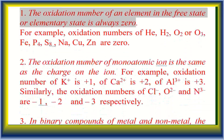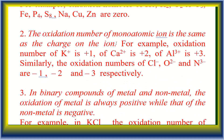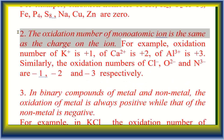Rule 2: The oxidation number of a monatomic ion (one atom present) is the same as the charge on the ion. For example, oxidation number of K⁺ is +1, Ca²⁺ is +2, Al³⁺ is +3. Similarly, Cl⁻ is −1, O²⁻ is −2, and N³⁻ is −3 respectively.